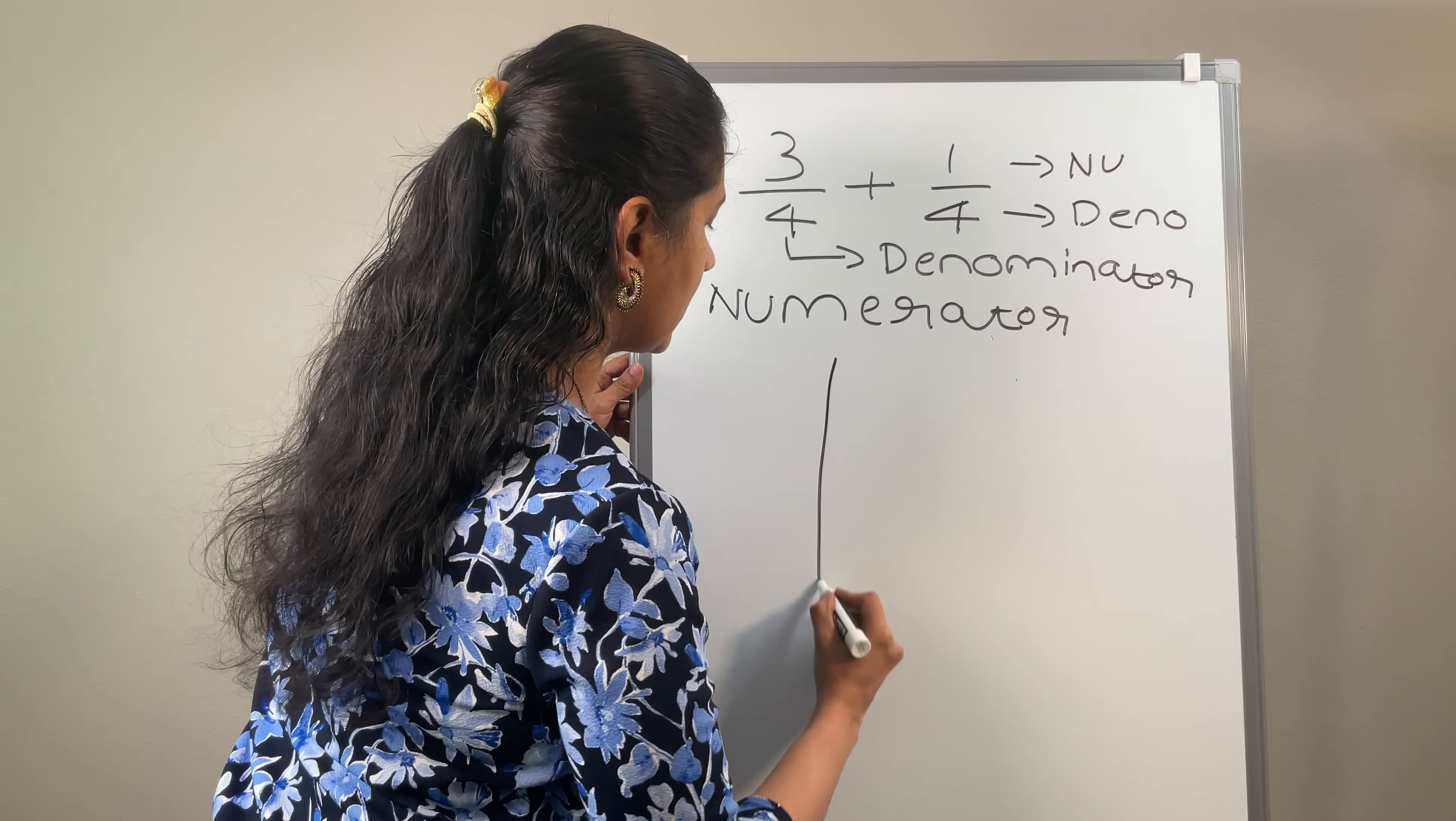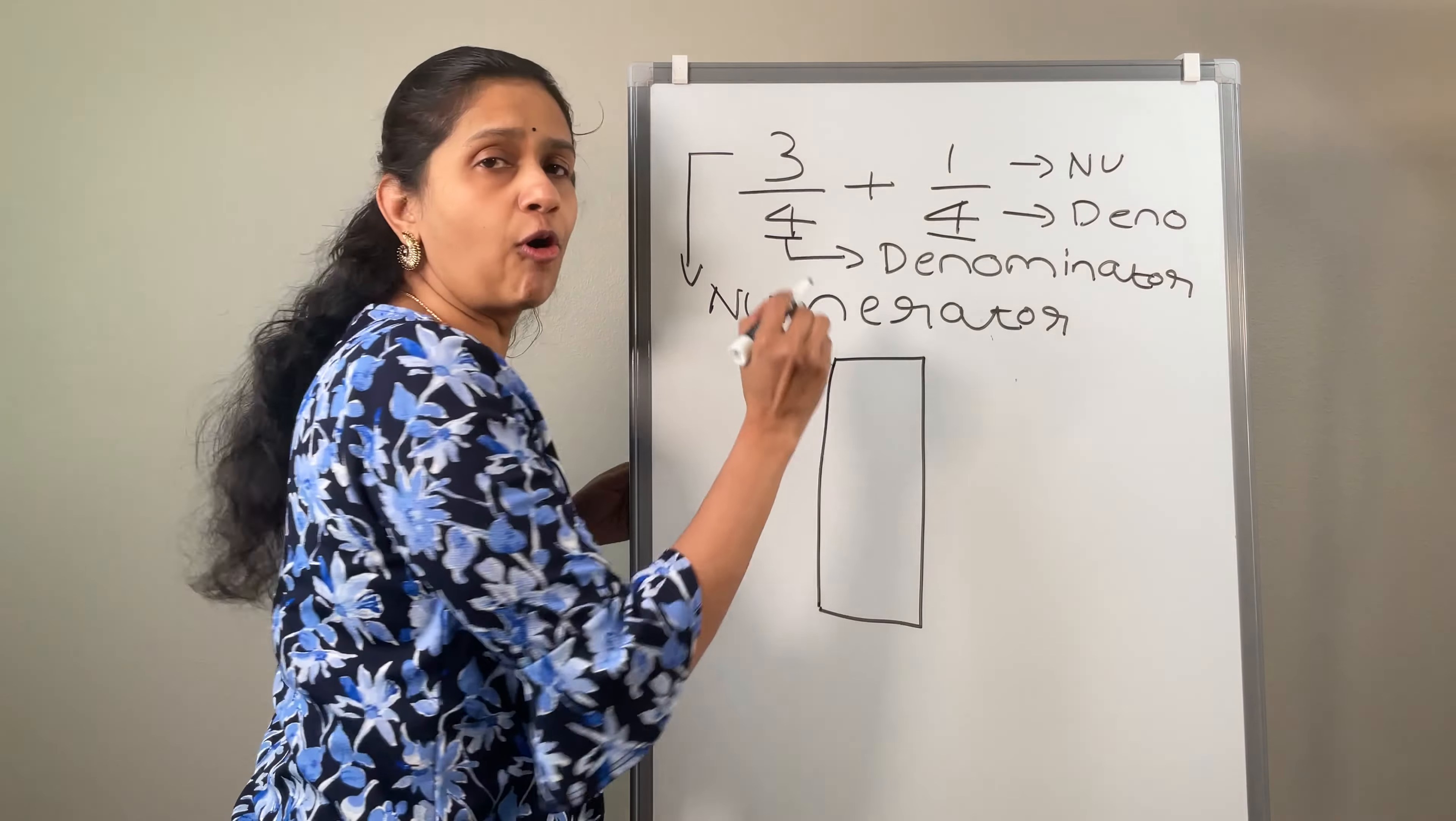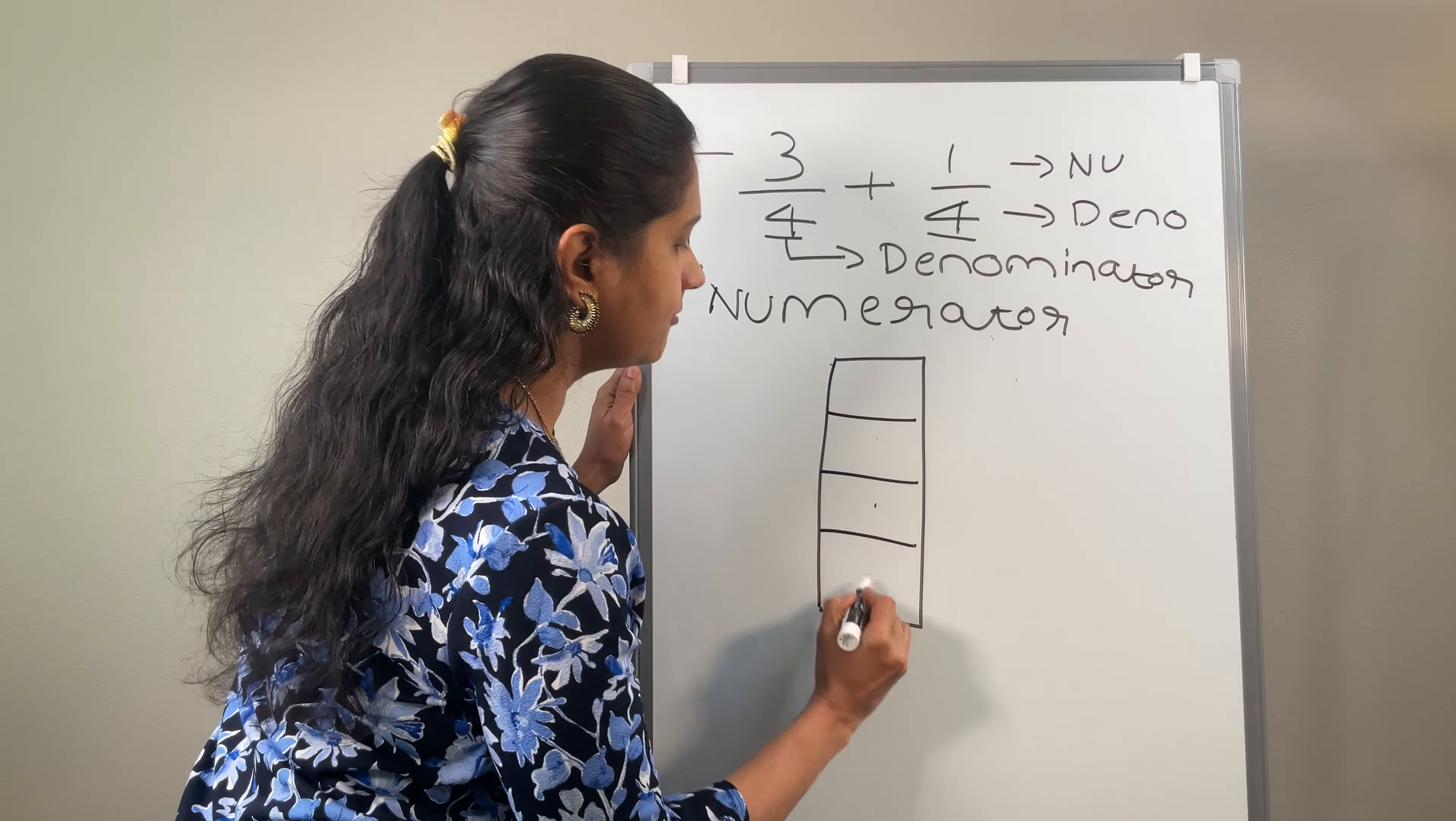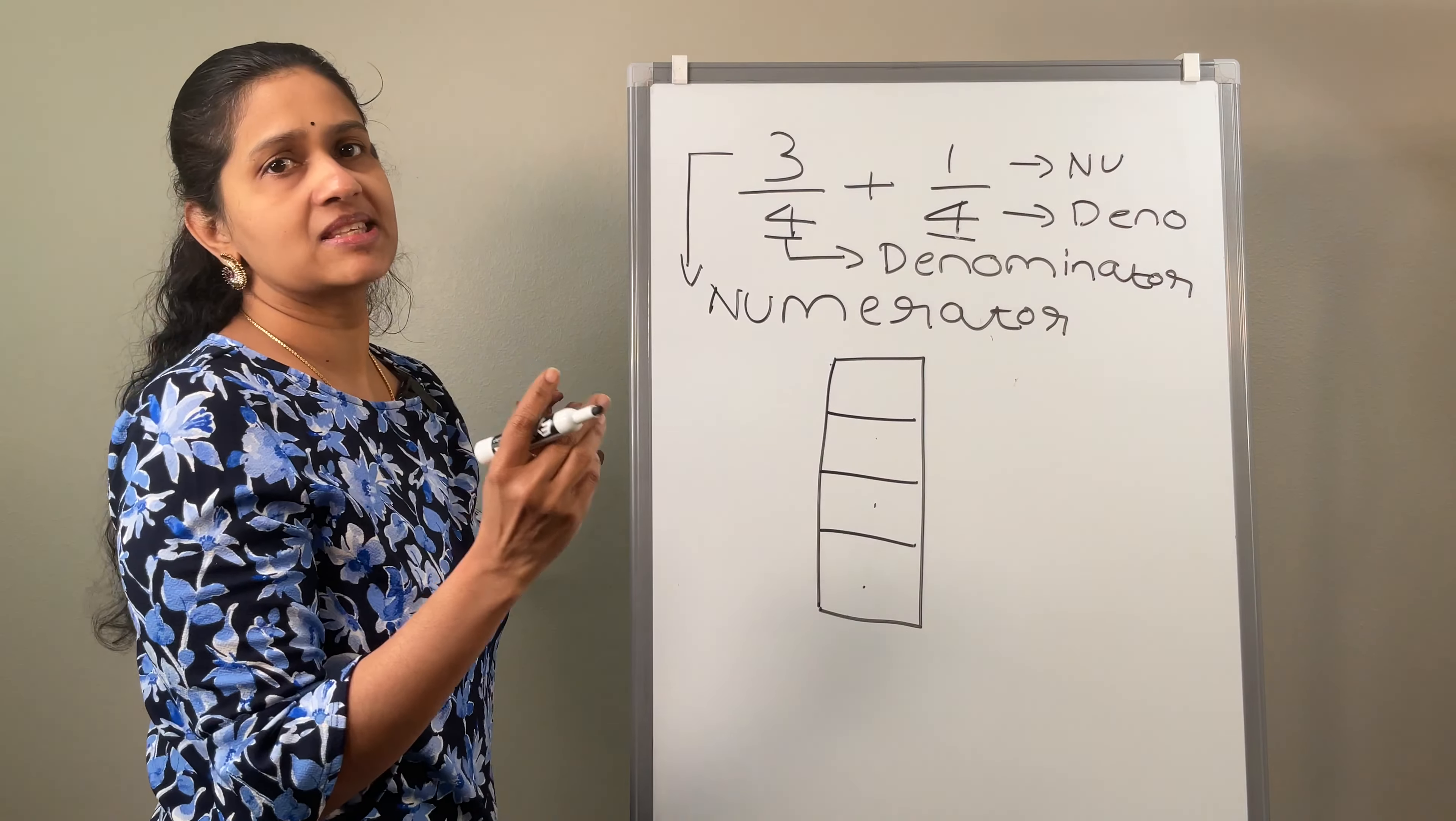Consider this rectangle. Now, you know the denominator has a number of 4. So let us divide this rectangle into 4 parts which means 1, 2, 3, 4. In the denominator, we have a number 4. So I am just dividing this rectangle into 4 parts.